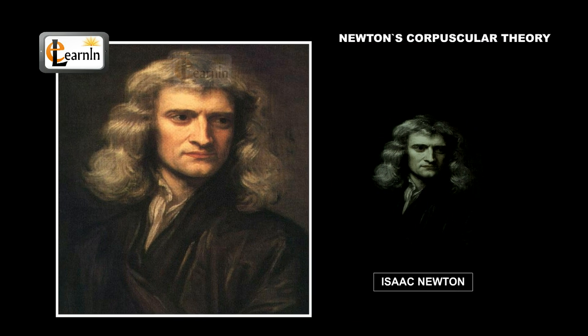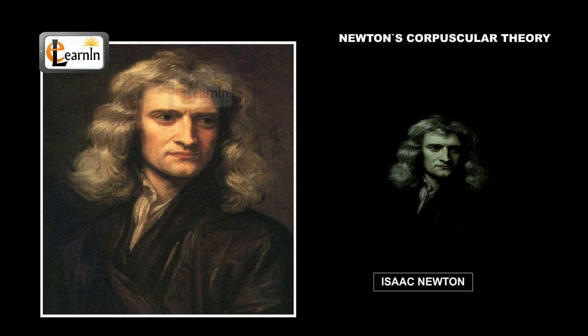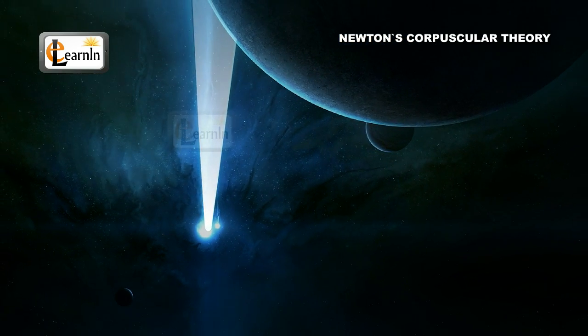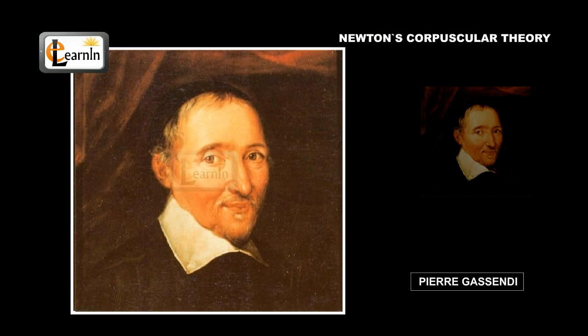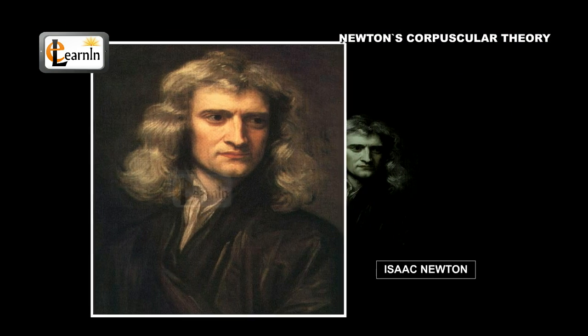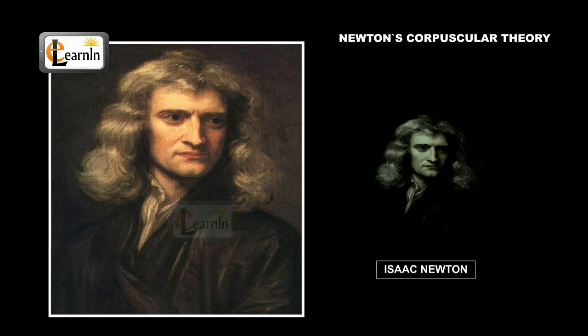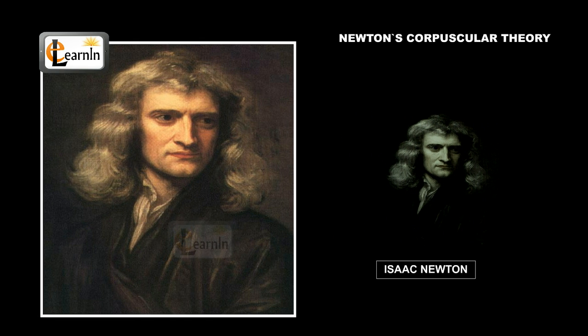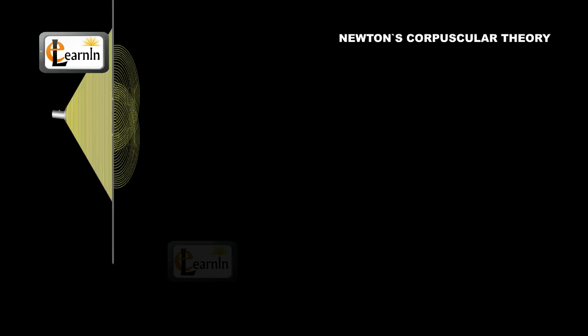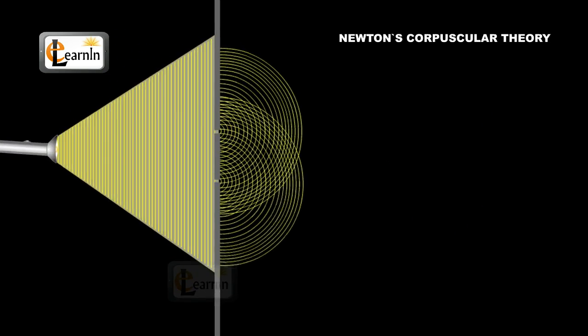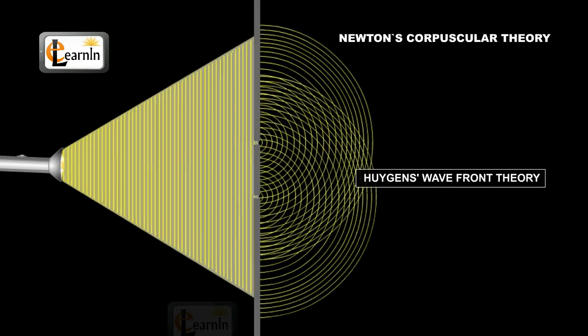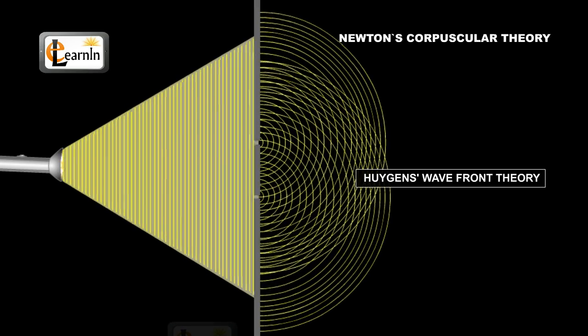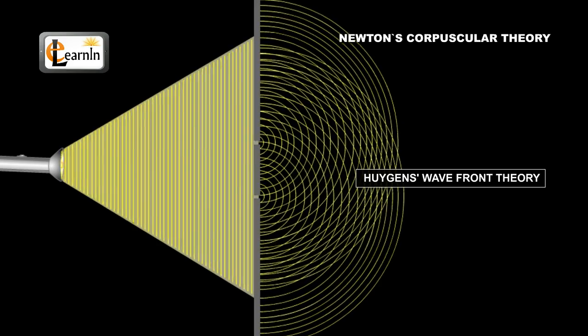Sir Isaac Newton's corpuscular theory was one of the earliest scientific attempts at understanding the nature of light. Even though it was originally set forward by Pierre Gassendi, it was Newton who later developed and proposed the corpuscular theory of light way back in the 17th century. However, after 100 years of existence, it later gave way to a more popular Huygens wavefront theory that could explain some of the limitations of Newton's corpuscular theory.